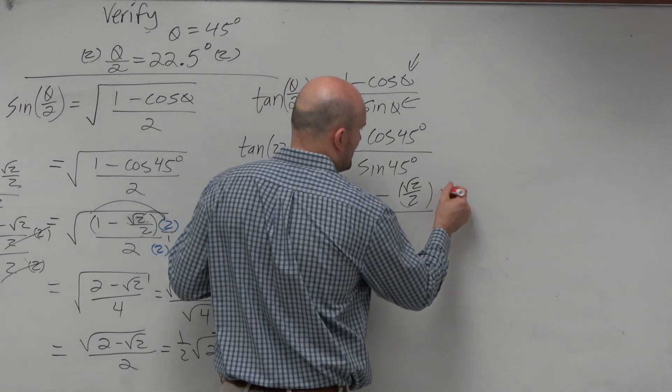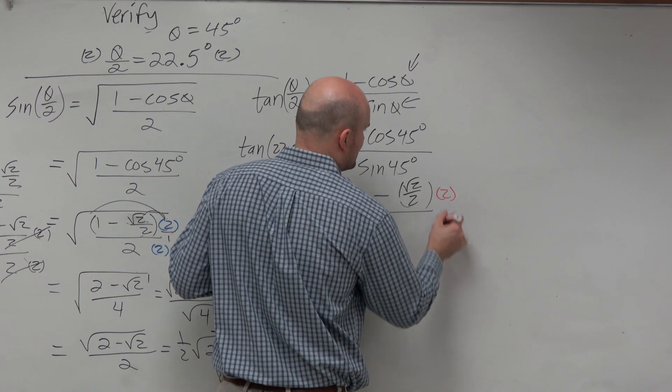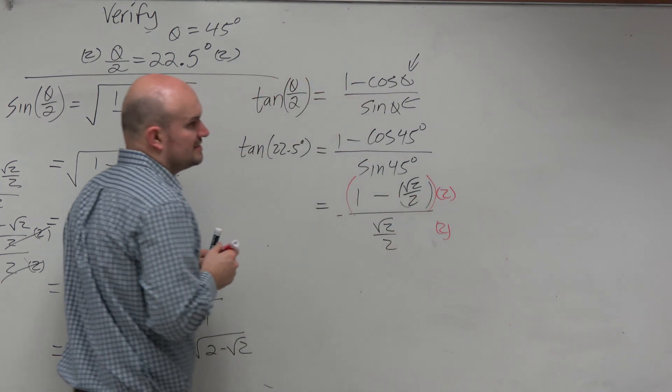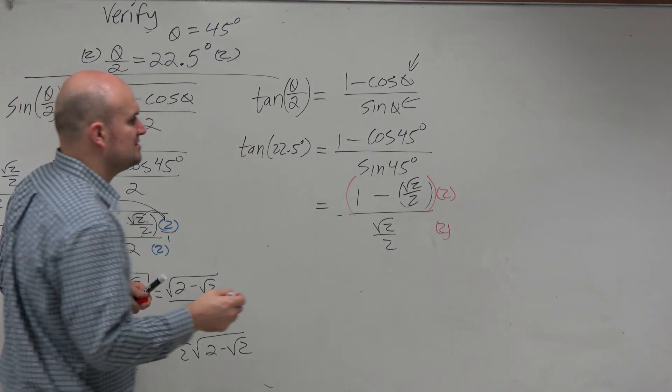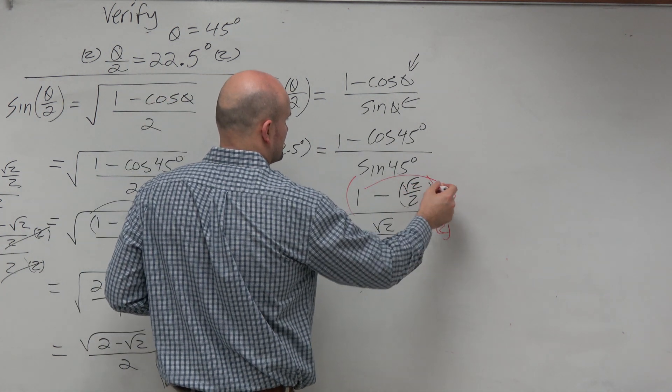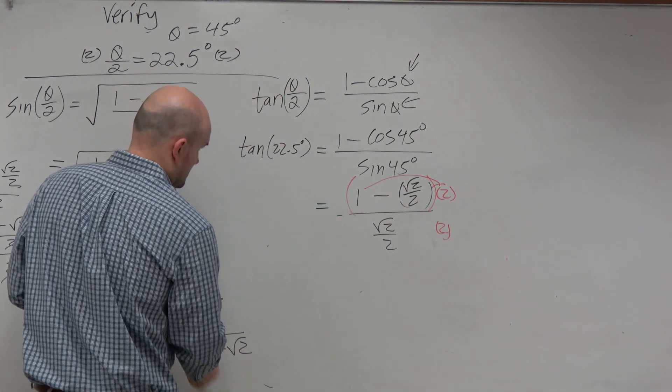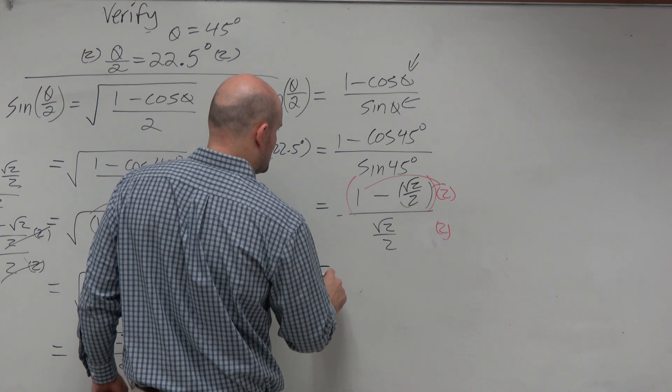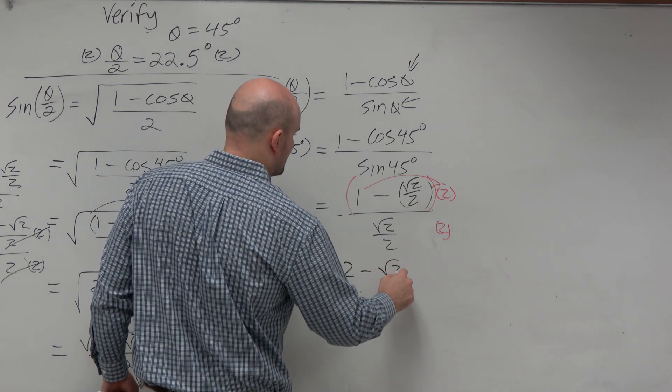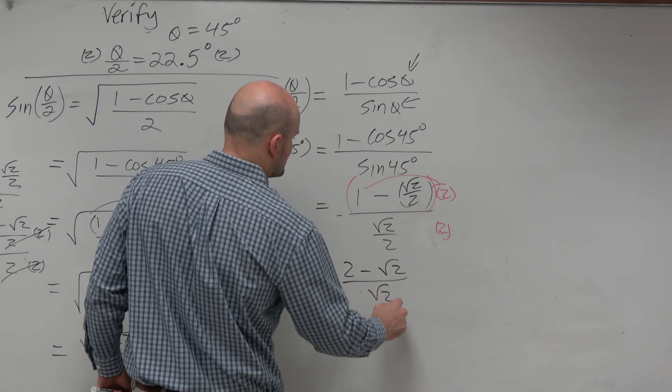To get rid of my 2, I'm going to multiply by 2 on the top and bottom. What is the big mistake people do? They forget distributive property. This 2 is being multiplied times both terms. When we multiply this, we get 2 minus square root of 2 over square root of 2.